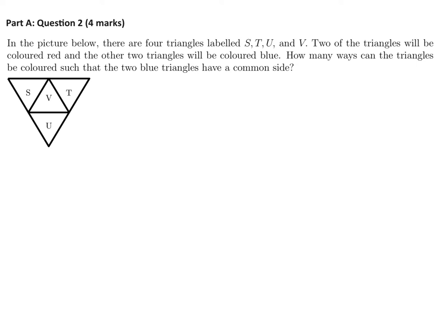In the picture below, there are four triangles labeled S, T, U, and V. Two of the triangles will be colored red, and the other two triangles will be colored blue. How many ways can the triangles be colored such that the two blue triangles have a common side?